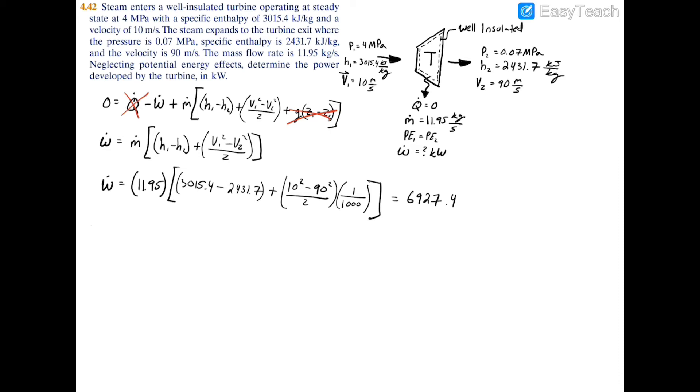And just to prove to you that this is going to be in kilowatts, let's break down our units. So we're going to have a kilogram per second for the mass flow rate times the specific enthalpy, which is going to be kilojoules per kilogram.